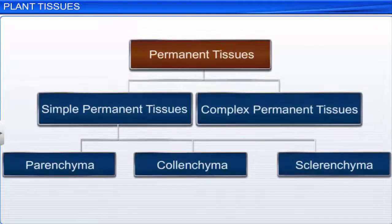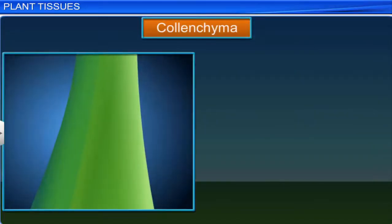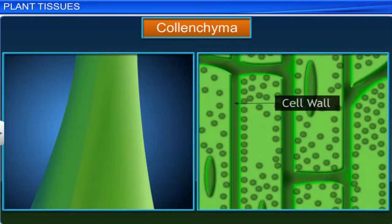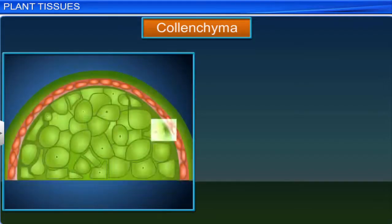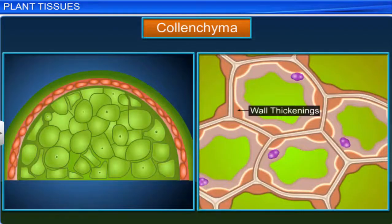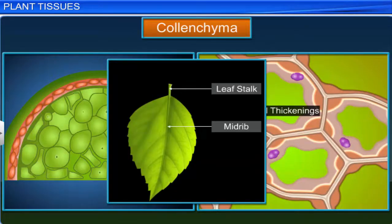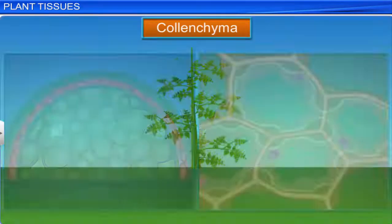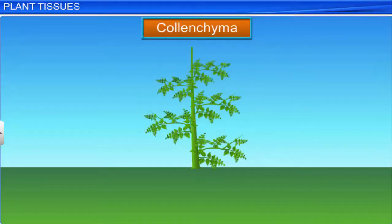Another simple permanent tissue is collenchyma. Collenchyma consists of elongated living cells with cell walls made of cellulose and pectin. These cells have irregularly thickened corners and have little intercellular spaces. They occur in the peripheral regions of stems, below the epidermis in leaf stalks, leaf mid-ribs, and also in herbaceous dicot stems. Collenchyma tissues provide mechanical support and flexibility in plants.